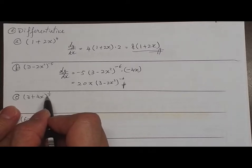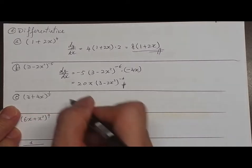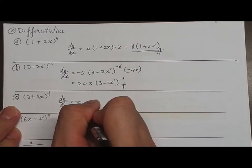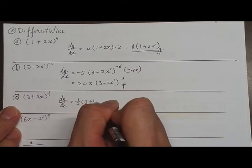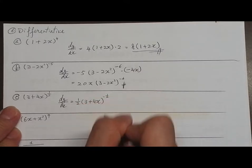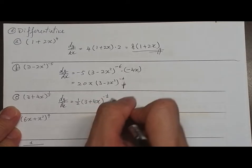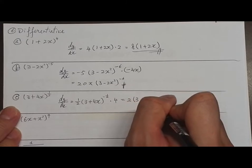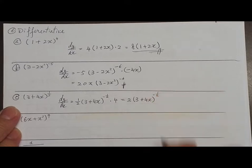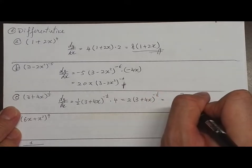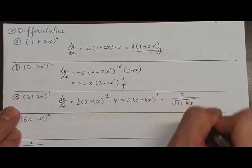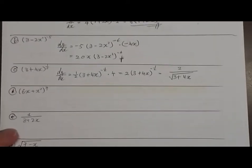Question C: y equals √(3 + 4x). dy/dx equals ½ multiplied by (3 + 4x)^(−½) multiplied by 4, giving 2(3 + 4x)^(−½), which can be written as 2 over √(3 + 4x).